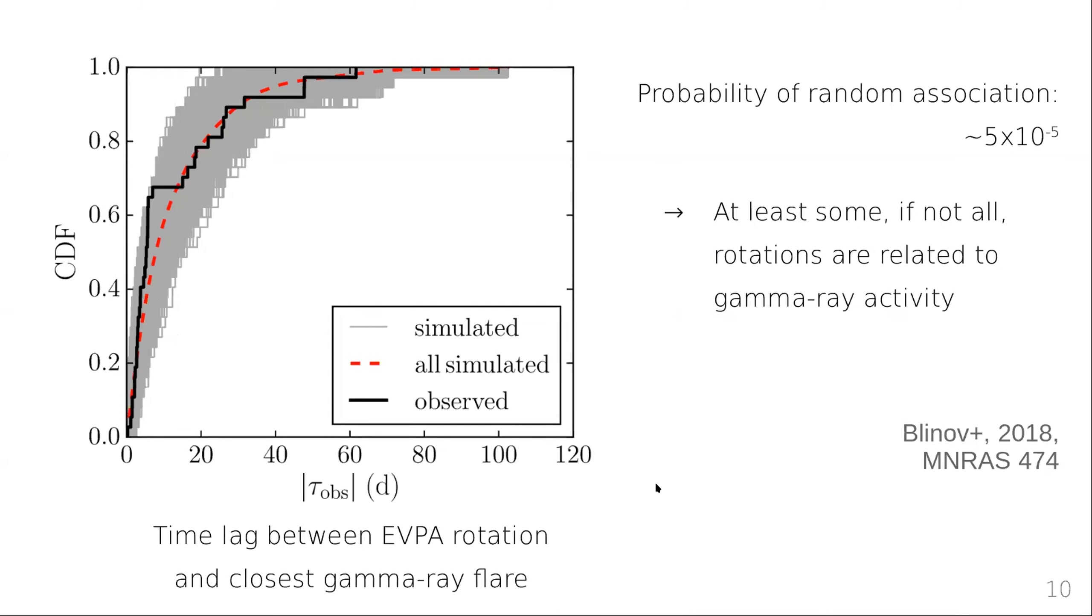For this plot, we went through the following analysis. In our 80 sources, we identified rotations of the polarization angle and we identified 40 of those events in our main campaign, which lasted for three seasons. We also searched for gamma ray flares in the Fermi LAT data and then identified the closest flare for each rotation event and calculated the time delays. What you can see here is the distribution of absolute time delays shown in the black curve. Now let's assume those two events are completely unrelated. We can simulate that by randomly placing our rotations in our observation periods, then repeating this analysis and we end up with simulated distributions of time delays, which are shown here in gray curves.